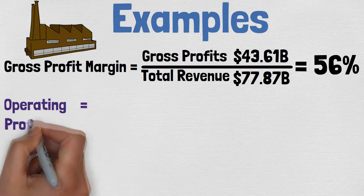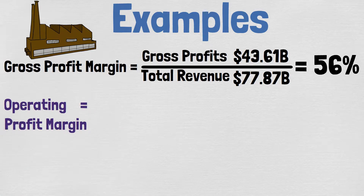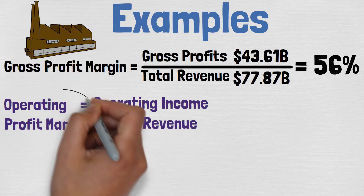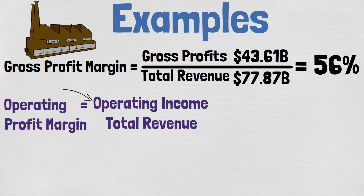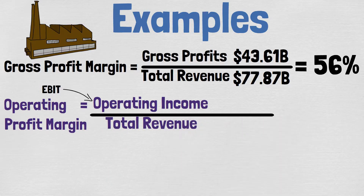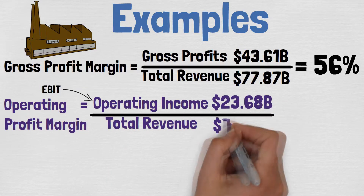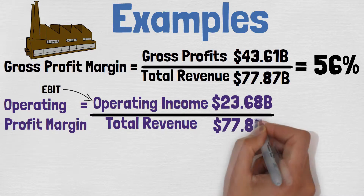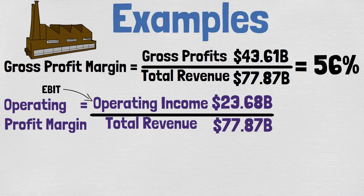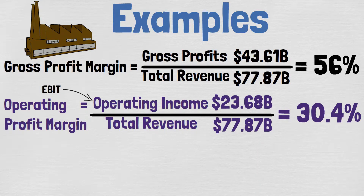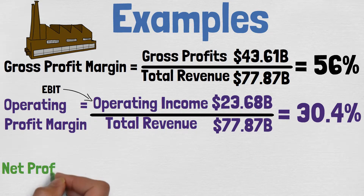To calculate the operating profit margin, you want to divide the operating income by the total revenue. The operating income is also called EBIT — Earnings Before Interests and Taxes. Intel's 2020 operating income was $23.68 billion and the total revenue was $77.87 billion, which means that the operating profit margin was 30.4%.